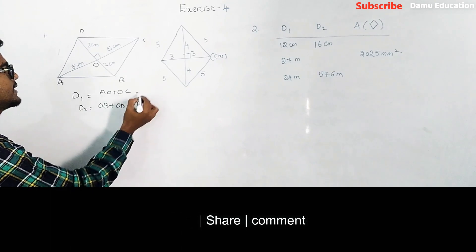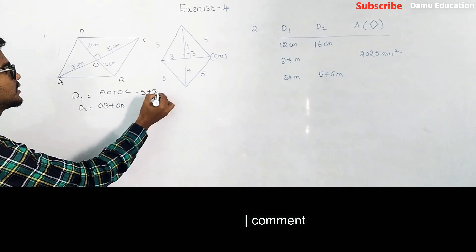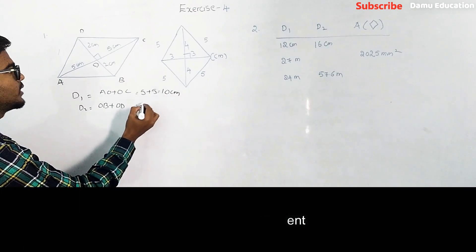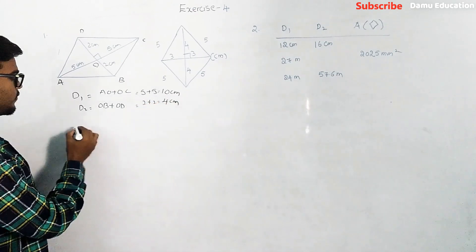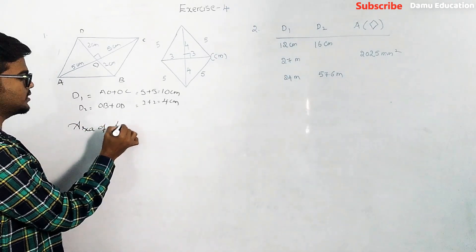So what is AO? 5 plus 5, that is 10 centimeter. Then this will be 2 plus 2, 4 centimeter.